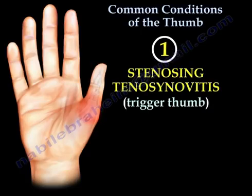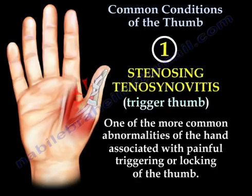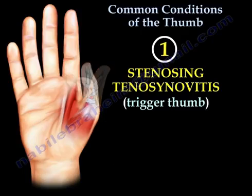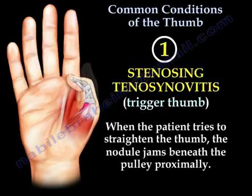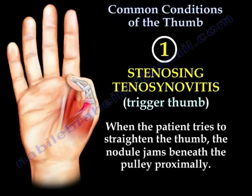Stenosing tenosynovitis — we call it trigger thumb. One of the more common conditions of the hand, especially the thumb, is called trigger thumb. It is associated with painful triggering or locking of the thumb. When the patient tries to straighten the thumb, the nodule jams beneath the pulley proximally.